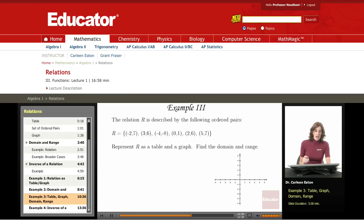The relation R is described by the following ordered pairs. So I'm given a set of ordered pairs. Represent R as a table and a graph. Find the domain and the range.